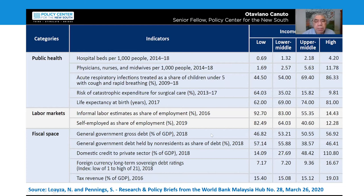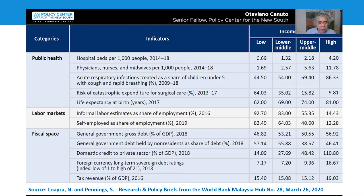There is also the issue of rampant informality in developing countries. In low- and middle-income countries, 50% to 90% of total employment consists of informal labor, as you can see in the table. Informal labor does not have benefits such as unemployment insurance, health insurance, and paid leave. Labor informality means that relief or recovery policies aimed at formal labor — such as increasing unemployment insurance, reducing payroll and income taxes, and extending paid sick leave — have very limited effects.